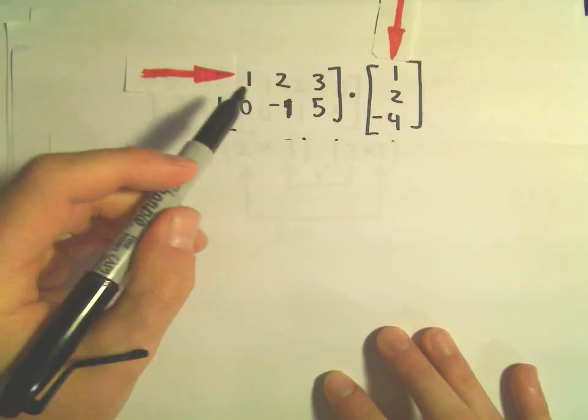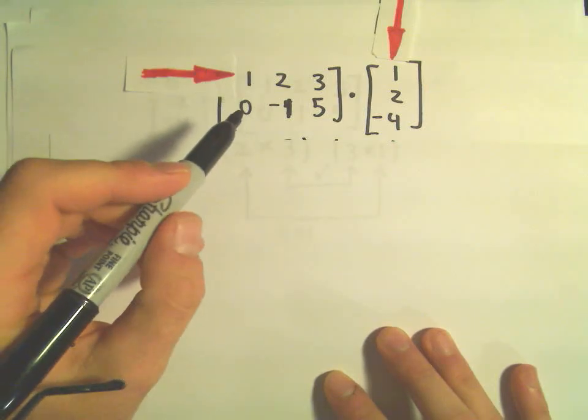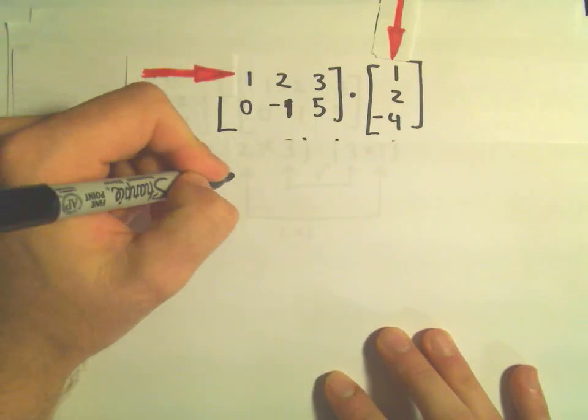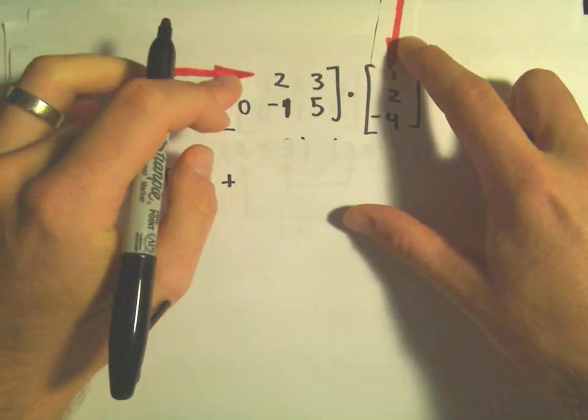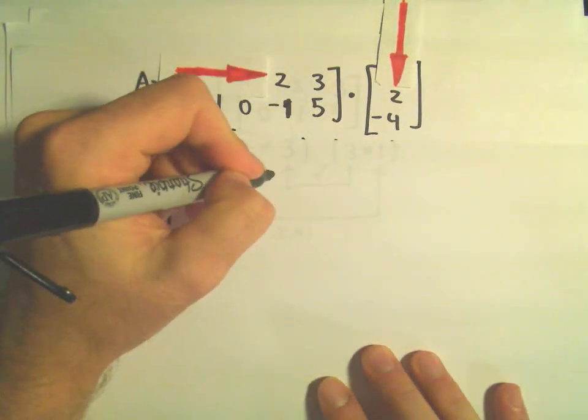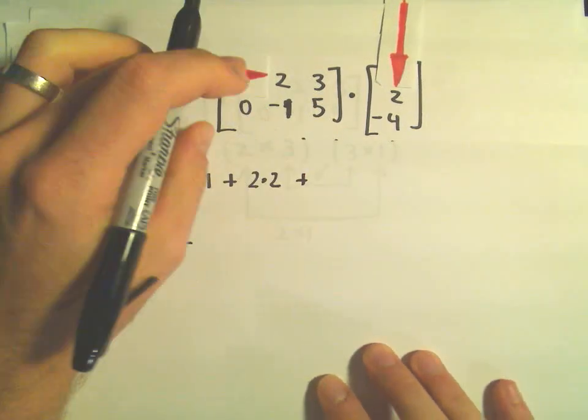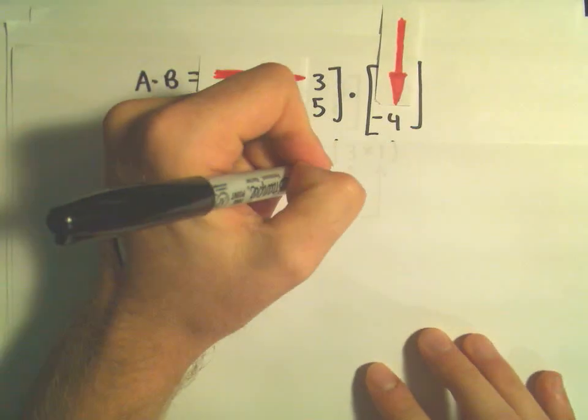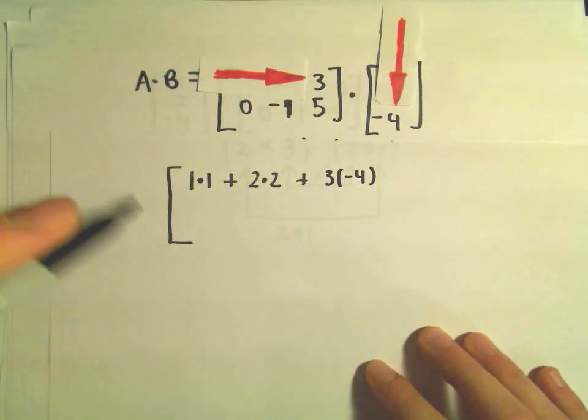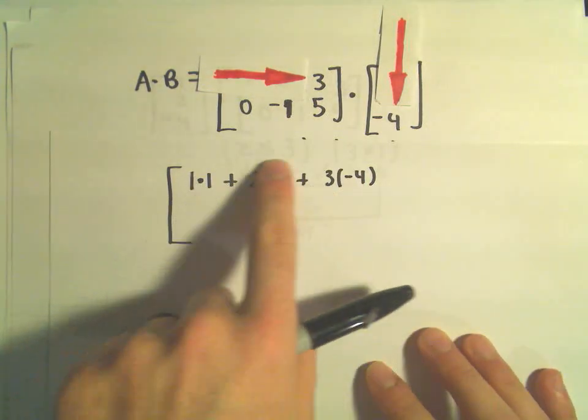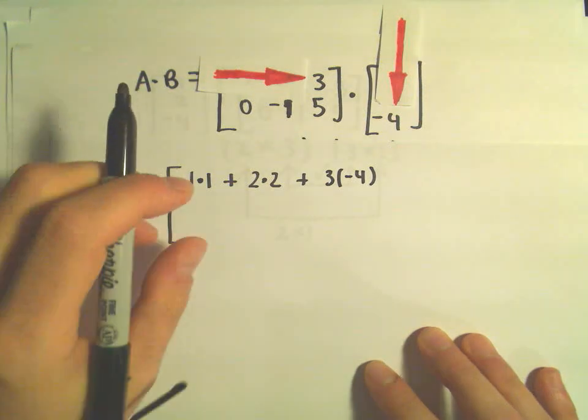So to do the matrix multiplication, I'm going to take 1 times 1, and then I add to that, and then I just multiply the next two numbers. So then I'm going to take 2 times 2, and then I'm going to add to that the next two numbers when I multiply, which will be 3 times negative 4. And I'm going to do all this arithmetic. This is going to be my first entry in my matrix.